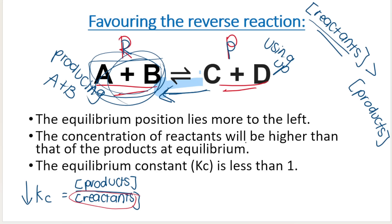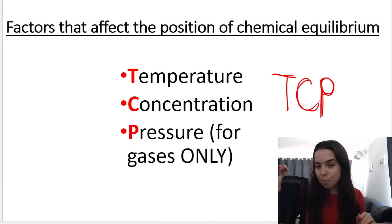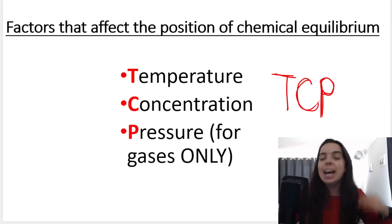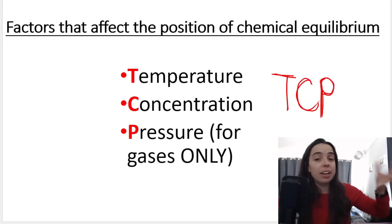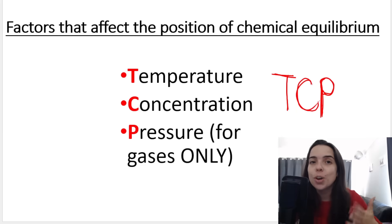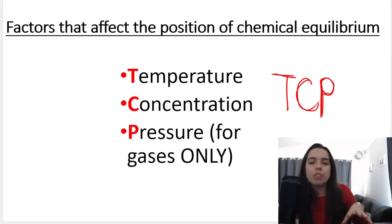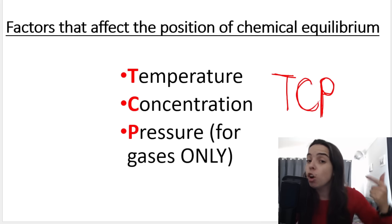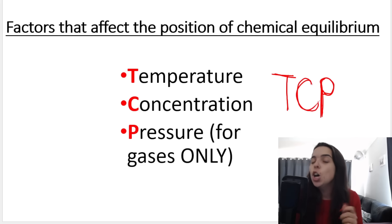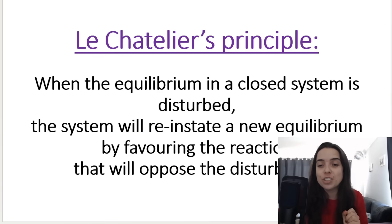There are various factors that affect the position of chemical equilibrium: temperature, concentration, and pressure — call it TCP. We need to know, for example, if I increase the concentration of a reactant, what does that do to the rate, which reaction is favored — forward or reverse? What does that mean for the concentration of reactants and products, and what does that mean for the Kc value? That's what I'll be going through in the next video, and remember it links with Le Chatelier's principle.